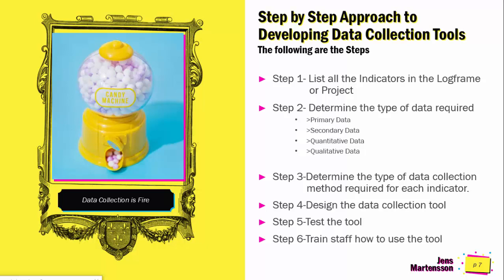Step three is to determine the type of data collection method required for each indicator. Among the methods are things like one-on-one interviews, focus group discussions, key informant interviews, and observation. You have to determine for each indicator which data collection method you will use.